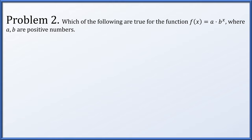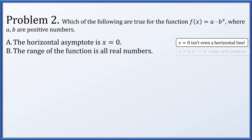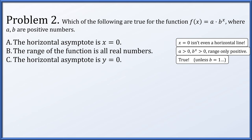In problem 2, we have the function f(x) = a times b to the x, where a and b are both positive. First, is the horizontal asymptote x equals 0? That's not even a horizontal line — definitely false. Is the range all real numbers? No, since a is positive and b to the x is positive, you can only get positive numbers. Is the horizontal asymptote y equals 0? This is true. Whether b is larger than 1 or less than 1, b to the x will approach 0 in one direction, giving a horizontal asymptote of y equals 0.